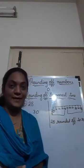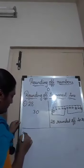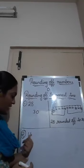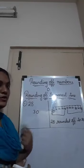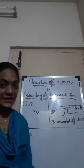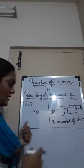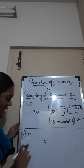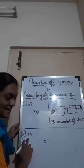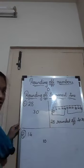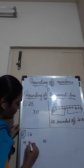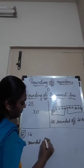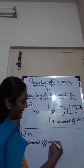Let's see one more example. Take 14. In the ones place we have 4, so rule number 1 applies: 0, 1, 2, 3, or 4 — the ones place becomes 0, and the tens place remains the same, that is 1. So 14 rounded off to nearest 10 is 10.